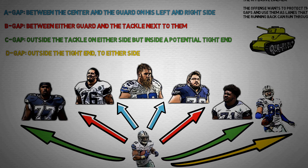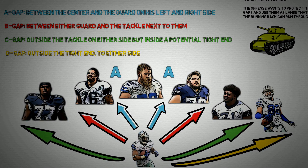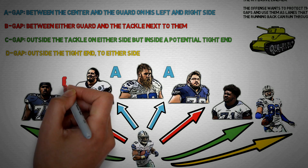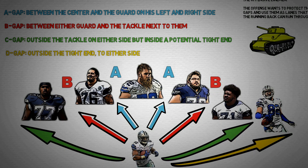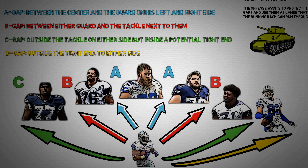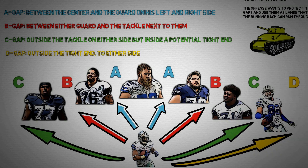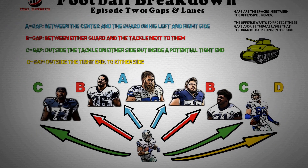So to summarize: we have the A-gap between the center and the guard on his left and right side. We have the B-gap between either guard and the tackle next to them. C-gap outside the tackle on either side, but inside a potential tight end. And D-gap outside the tight end to either side.